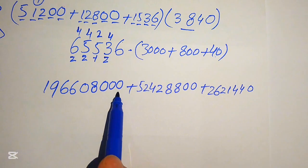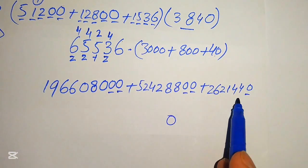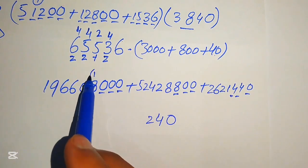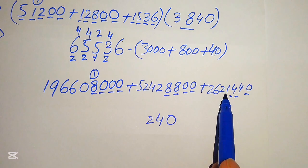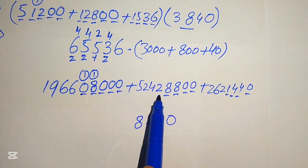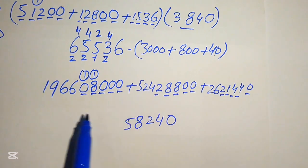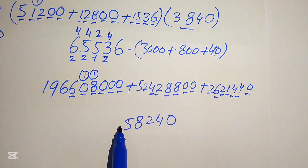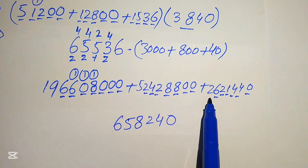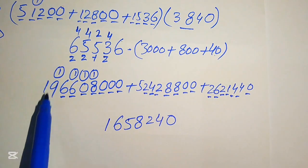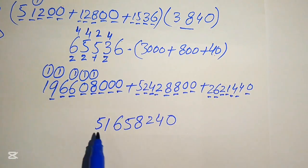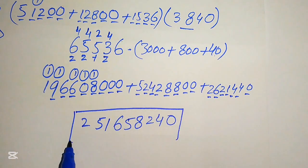Finally, we sum all three partial products. Working through each column: 0 plus 0 plus 0 is 0; 0 plus 0 plus 4 is 4; 0 plus 8 plus 4 is 12, write 2 carry 1; 8 plus 8 is 16, plus 1 is 17, plus 1 is 18, write 8 carry 1; 0 plus 2 is 2, plus 2 is 4, plus 1 is 5; 6 plus 4 is 10, plus 6 is 16, write 6 carry 1; 6 plus 2 is 8, plus 2 is 10, plus 1 is 11, write 1 carry 1; 9 plus 5 is 14, plus 1 is 15, write 5 carry 1; 1 plus 1 is 2. So this is the final answer of the given question. Thank you for watching, please subscribe for more exciting videos.